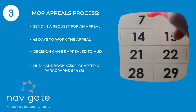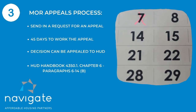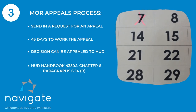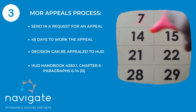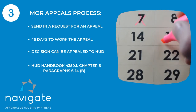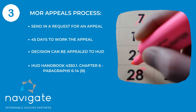So let's talk about the appeal process. You have the right to appeal the score. You send in a request for an appeal and we have 45 days to work the appeal. If you don't like our decision, then you have the right to appeal the decision directly to HUD. The HUD handbook 4351 chapter 6 gives you all the details and all the information that you need to appeal that score to HUD.